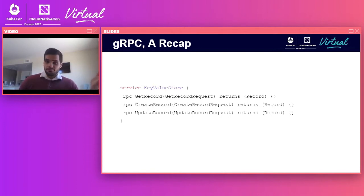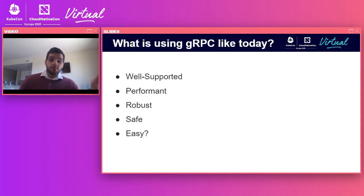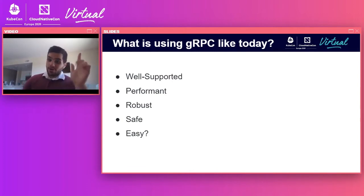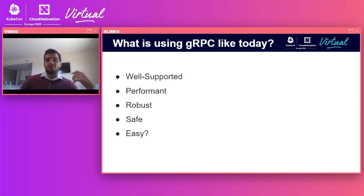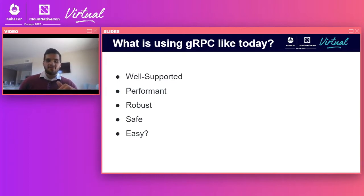What do we hear from these users? We hear it's well-supported — you have a preferred language, odds are we've got bindings and tooling for it. You want to run Windows? We got you. You need to run on ARM? No problem. We hear that it's performant. At the transport level, we introduce very little overhead, and a lot of complex logic has been put in place to ensure maximal performance for multithreaded applications. Protocol buffers, being a binary serialization format, cut down substantially on the amount of time you would otherwise be serializing and deserializing JSON.